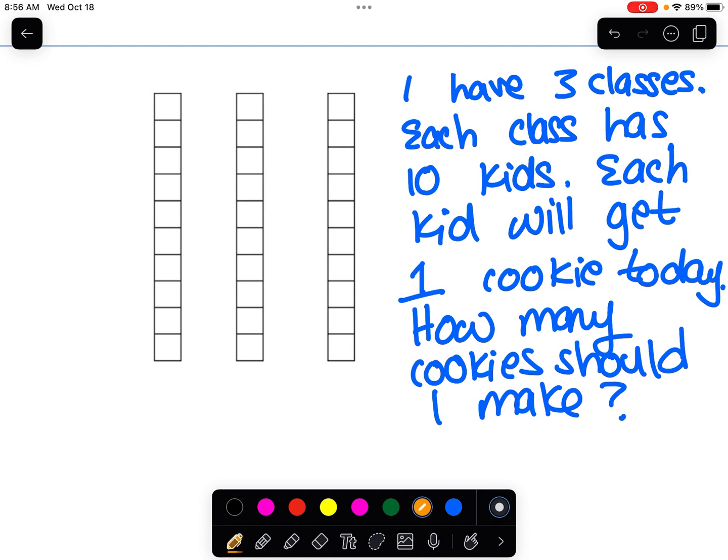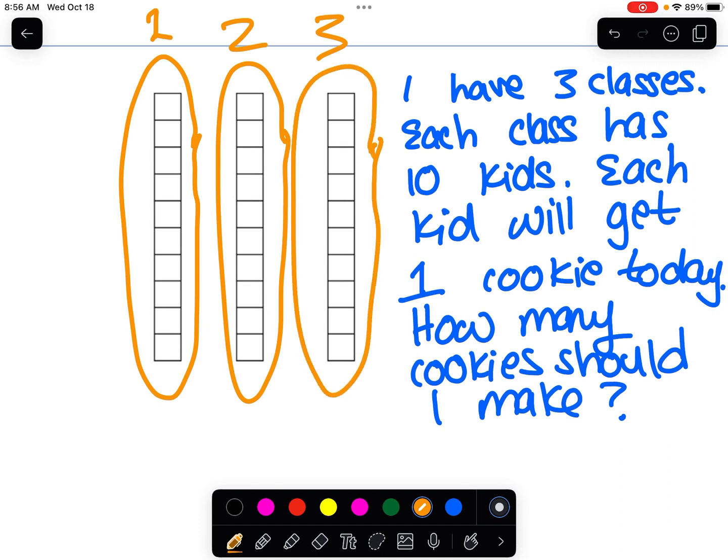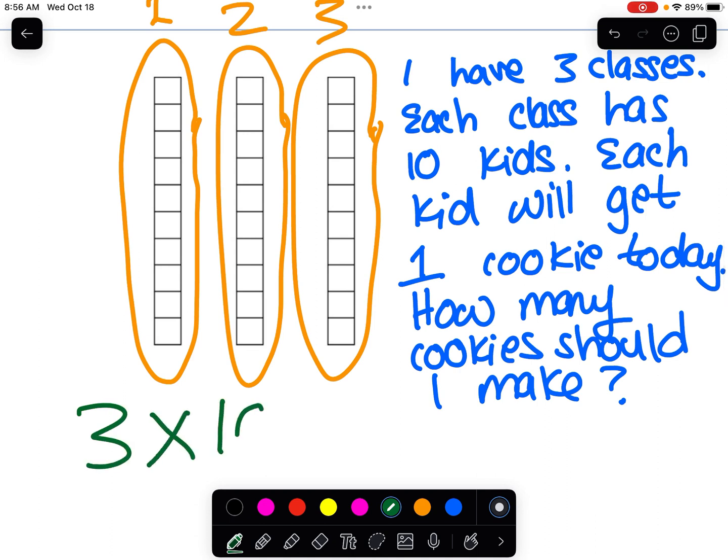How many cookies should I make today? I have three classes. That's one group of ten. So this is class one, this is class two, this is class three—another ten kids, and another ten kids. Now, to write the multiplication equation, I'm going to say I have three groups of ten, or three times ten. And that equals thirty. So I need to make thirty cookies.